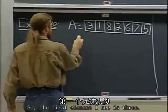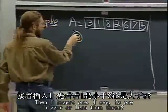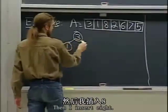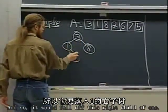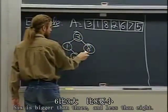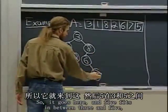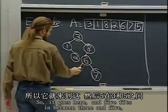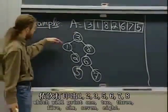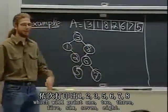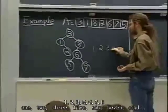The first element is 3, so I insert 3 into an empty tree. Then 1 — it's smaller than 3, so it goes left. Then 8 — it's bigger than 3, so it goes right. Then 2, which fits between 1 and 3, so it's the right child of 1. Then 6 — bigger than 3, less than 8, so it goes there. Then 7 — bigger than 3, less than 8, bigger than 6. And 5 fits between 3 and 6. Then an in-order traversal prints 1, 2, 3, 5, 6, 7, 8.